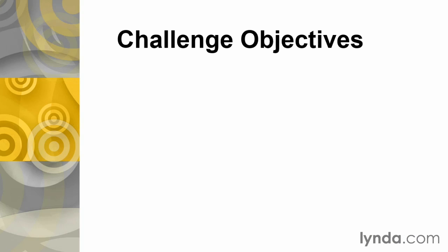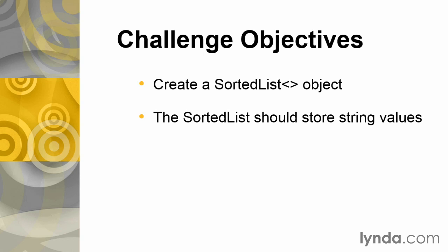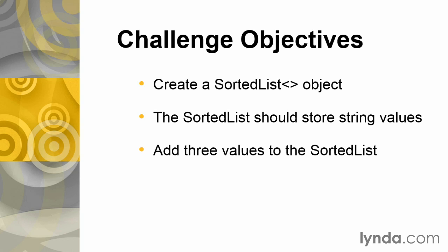In this challenge, you're going to work with a generic sorted list type. Within your code, you'll create a sorted list object. The sorted list object should store string values for the key and the value portions of this sorted list. And using the appropriate method, you will add three values to the sorted list.